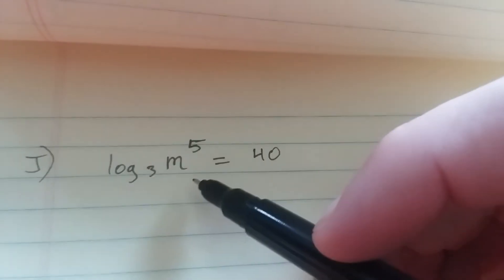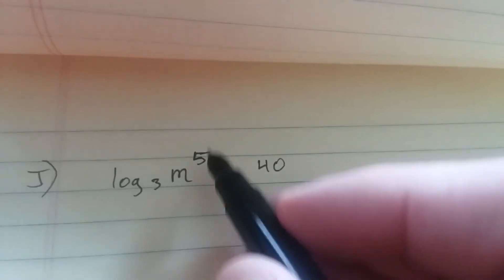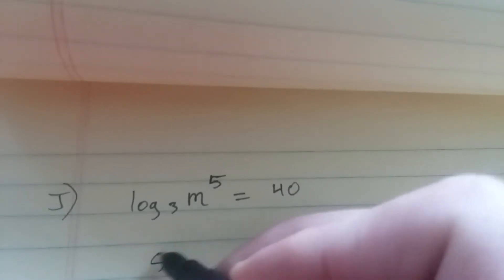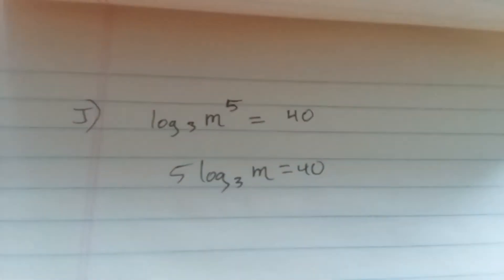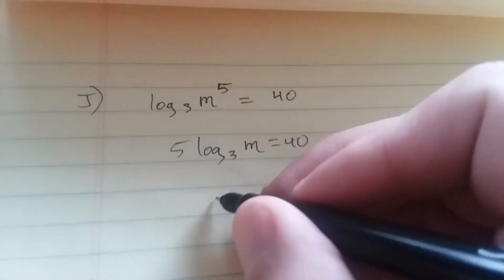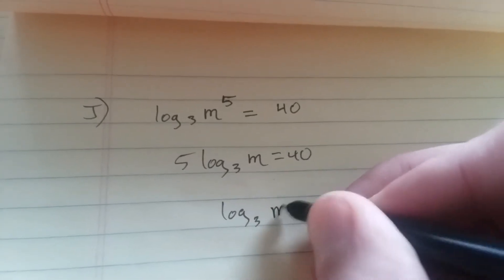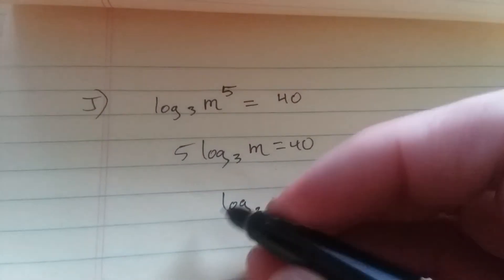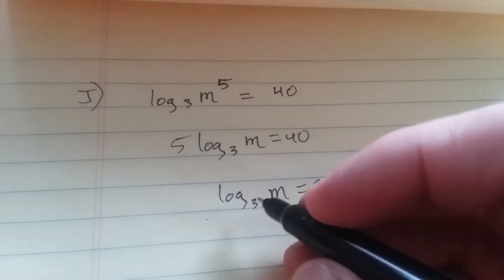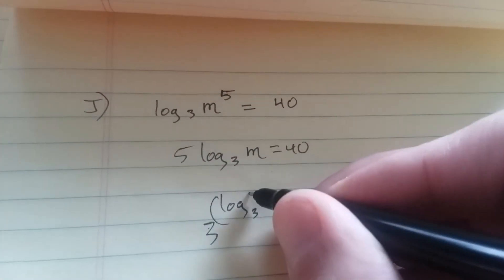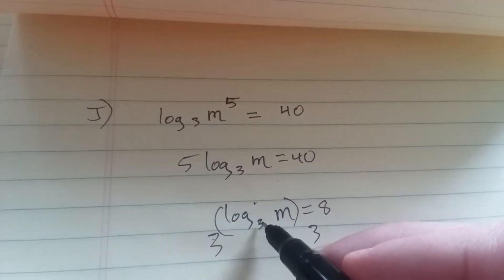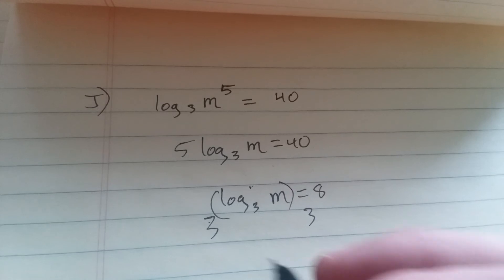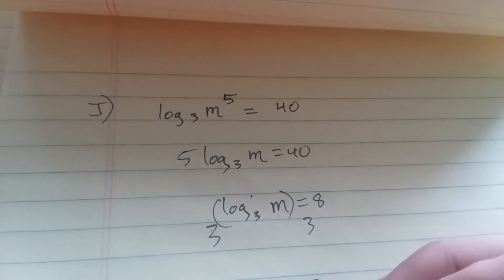Log base 3 of m to the power of 5 equals 40. This 5 is an exponent — remember your power rule, this 5 can come down out front. So 5 log base 3 of m equals 40. Divide both sides by 5: log base 3 of m equals 8. Take both sides with a base of 3: 3 to the power of this equals 3 to the power of 8. The 3 and log base 3 cancel each other out, so m equals 3 to the power of 8.